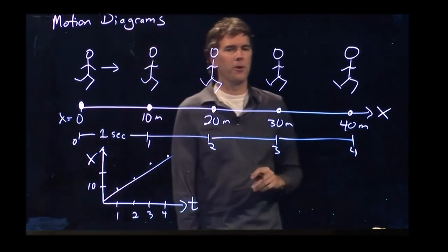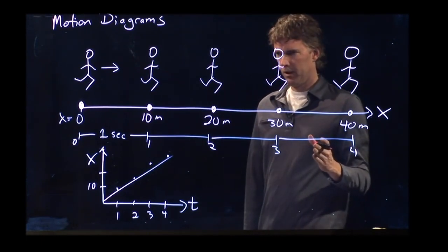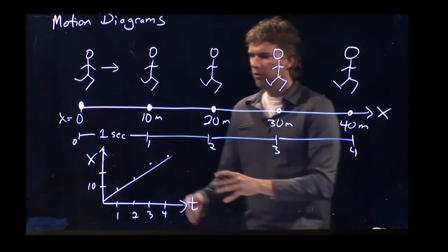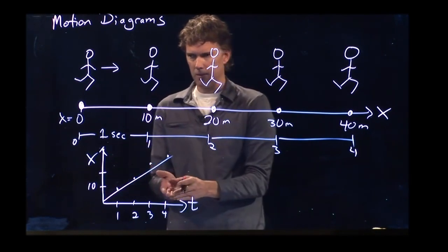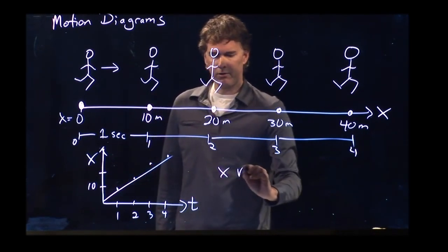And we, of course, get a straight line that connects all those. So in this example, this is what the graph would look like. This is the position versus time graph, X versus T.